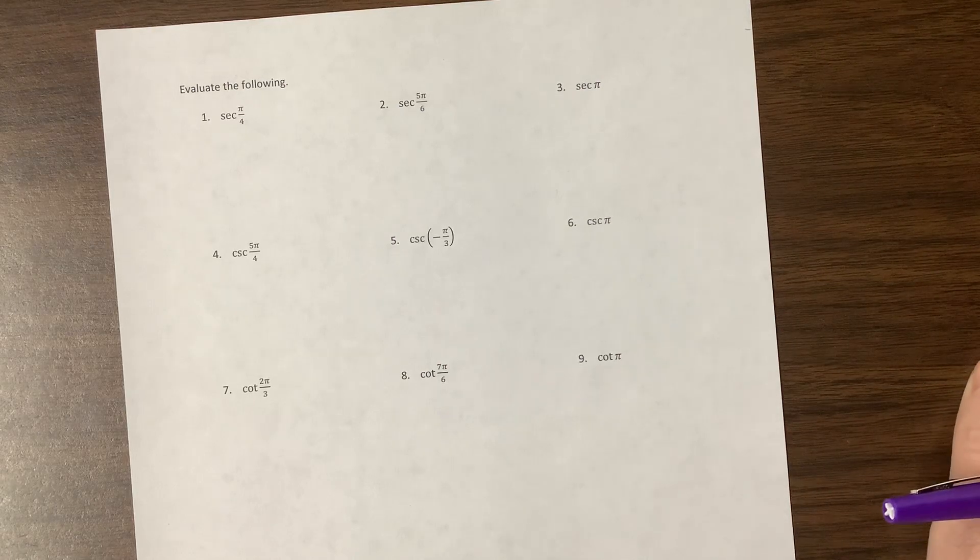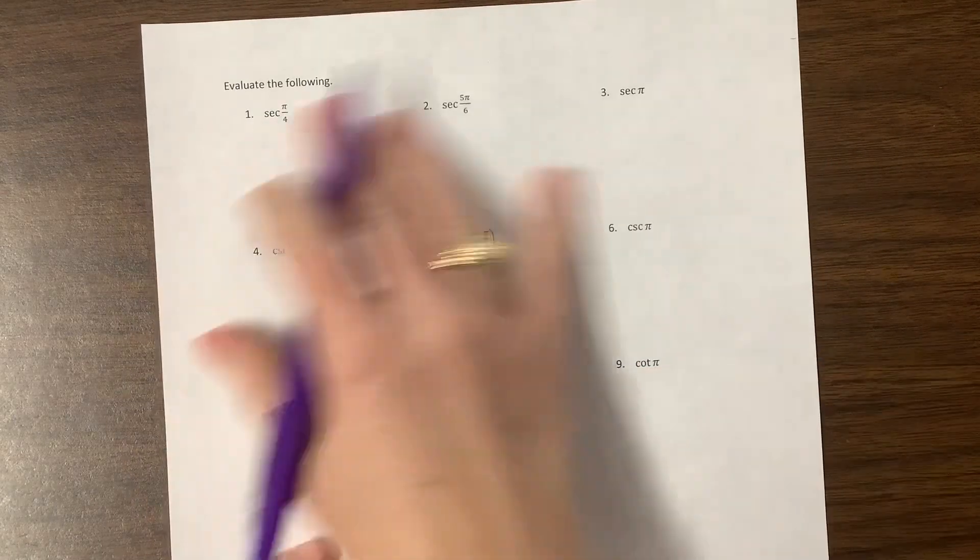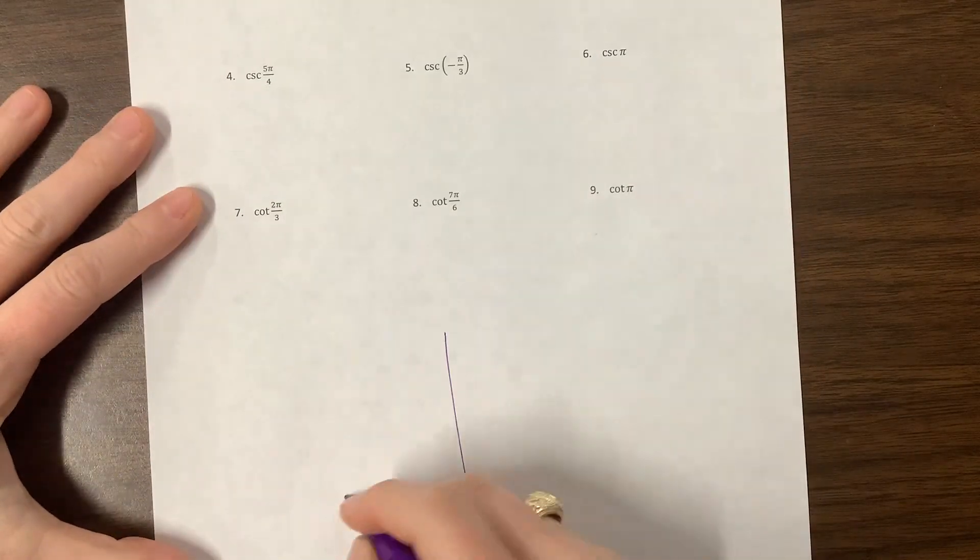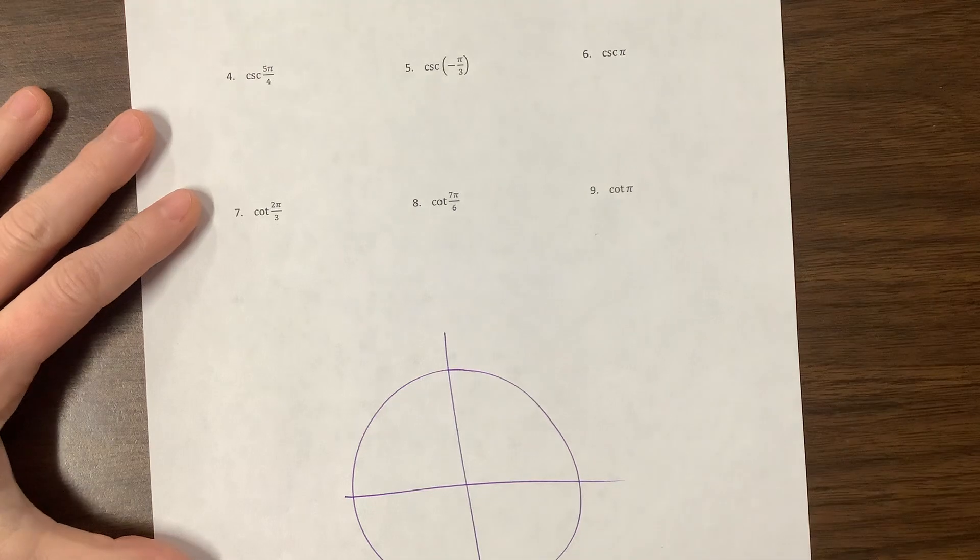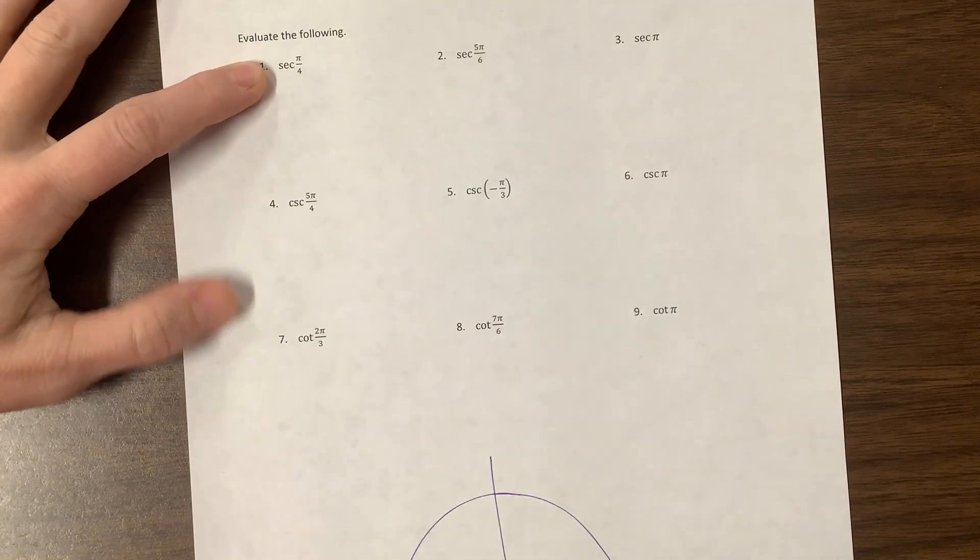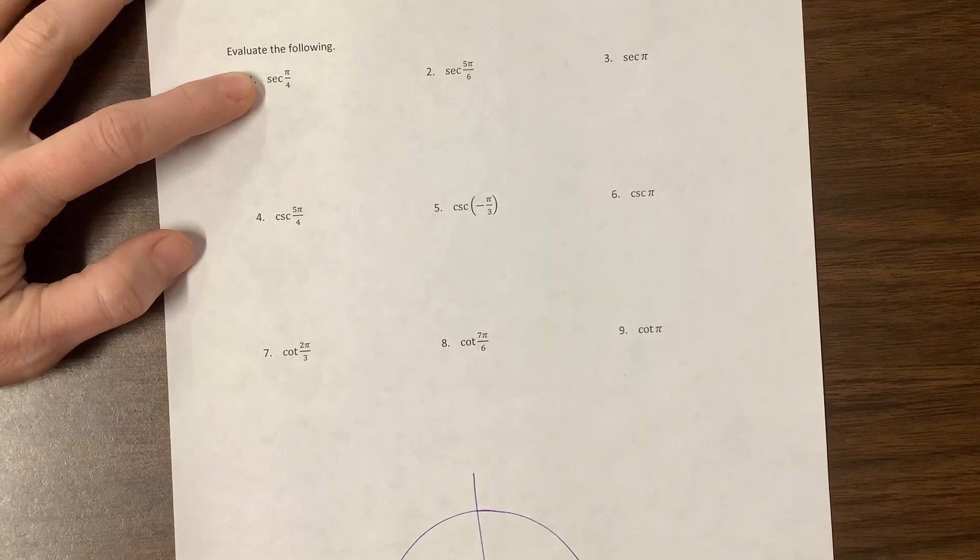But what I didn't have in the past is how to evaluate some of these secant, cosecant, and cotangent ideas. So I may just sketch a unit circle in case that helps you see what's happening. I'm not going to draw it all out. So secant, they're asking for secant of pi over 4.